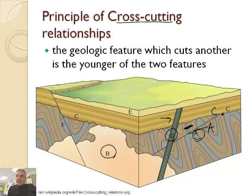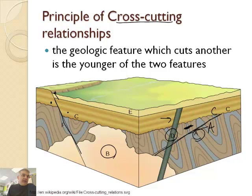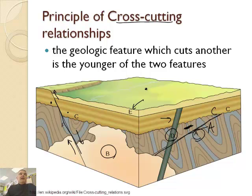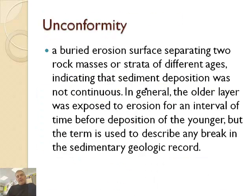Another thing to note here is we see some faults — the faults are shown as lines. When did these faults take place? Well, letter C right here — that's this sort of brown color — C used to be up here and then faulted. This is a normal fault. This fault happened after C was laid down, but before E, because E has come in and is unfaulted. So E is the youngest feature on this map.